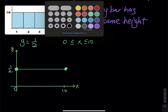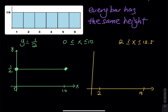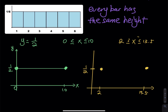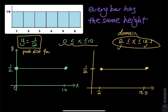What if I use the same function y equals 1 half but with x between 2 and 13.5? Draw a vertical axis and a horizontal axis. Make marks at x equals 2 and x equals 13.5, then draw a horizontal line between those two points. The restriction on x — x lives between two numbers — is called the domain. And y equals 1 half here is called the probability distribution function of a uniform distribution.